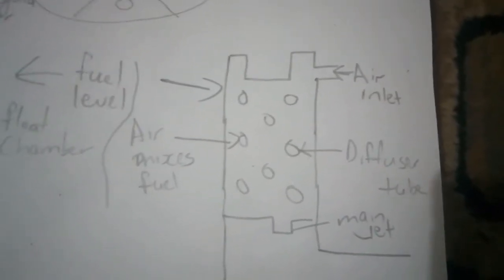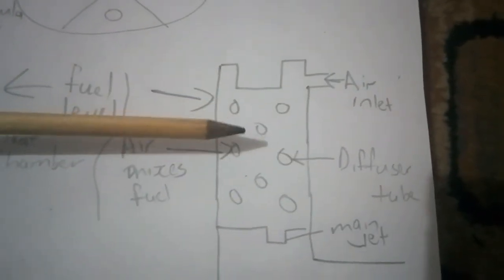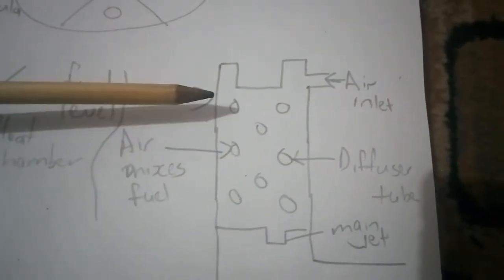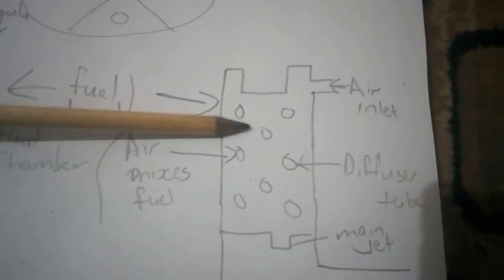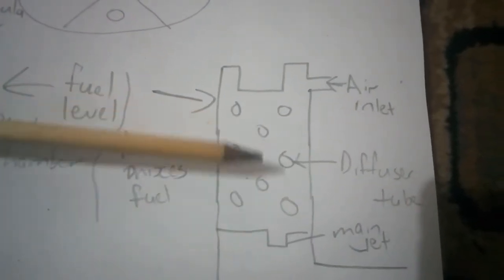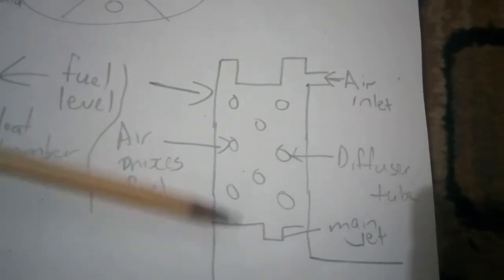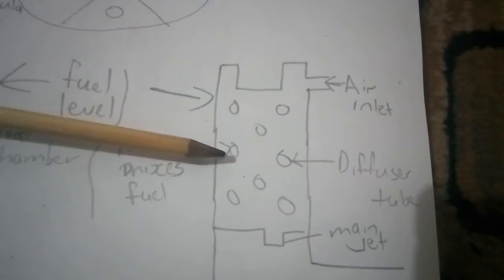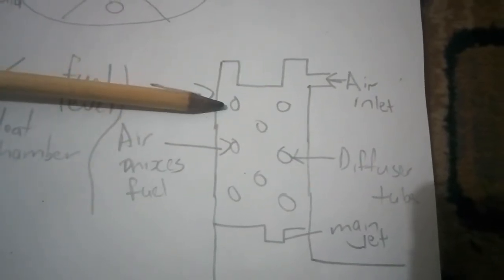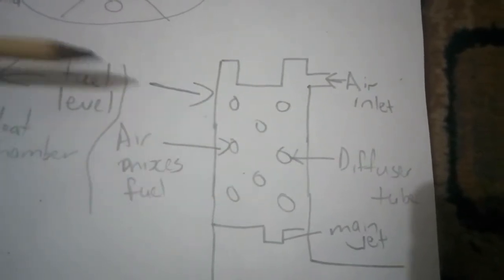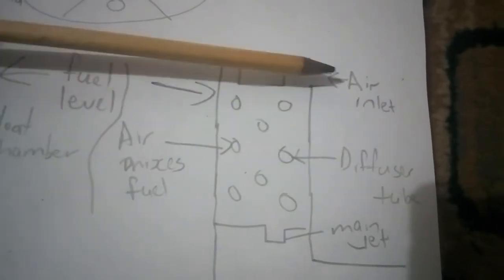What this diffuser tube does: at idle, the fuel level in the float chamber and the diffuser is the same. As RPM increases, due to restriction from the main jet system and fuel being drawn out, the fuel level changes between the two. We then take air from the air inlet or the air balance duct to mix inside this diffuser tube.